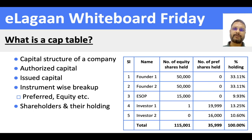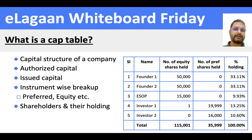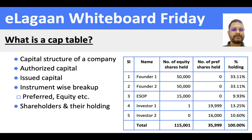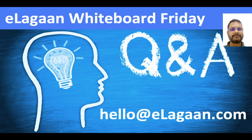This shows how much the founders collectively control, how much the investors hold, and if you have already allocated an ESOP pool, you include that entry as well. If the ESOP pool has not yet been created, that entry doesn't appear. But at any point in time, the cap table shows the 100% holding of the company. That's what a cap table is. If you have any queries, feel free to drop us an email at hello@ilagan.com.